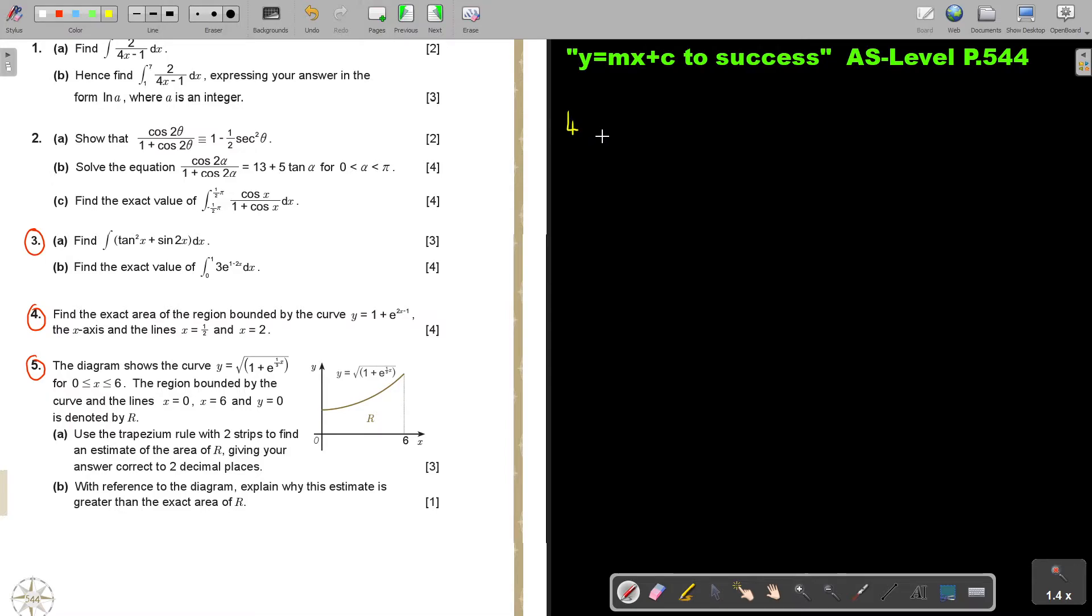Number 4. Find the exact area of the region bounded by the curve. So what is the curve? The curve is 1 plus E to the power of 2X minus 1. The X-axis and the lines. Now I can write it in. So the lines, the smallest one here, because it's on a number line. First will be a half, then the biggest one there. And then it's 1 plus E, 2X minus 1. And then it's going to be integrating 2X.